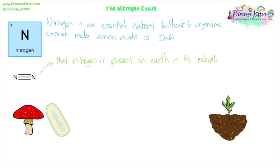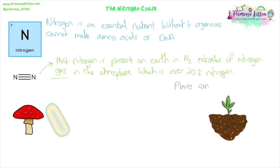It starts with the plants, because they are producers. They are the ones producing these molecules — amino acids — for the first time out of elements from the environment. They use light energy and photosynthesis to make sugars, and then combine those sugars with nitrogen to make amino acids. Plants can't absorb nitrogen gas the way they absorb oxygen and carbon dioxide through their leaves. They have to absorb it as nitrates from the soil.